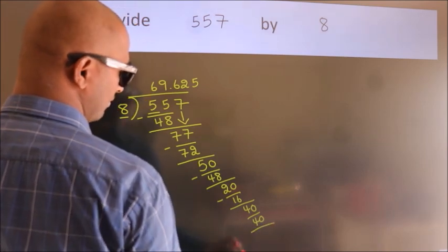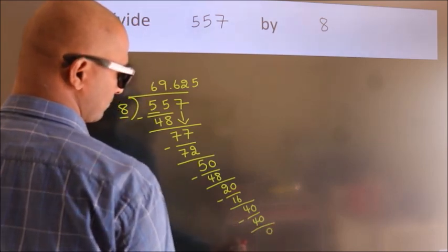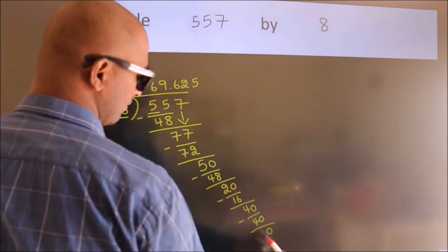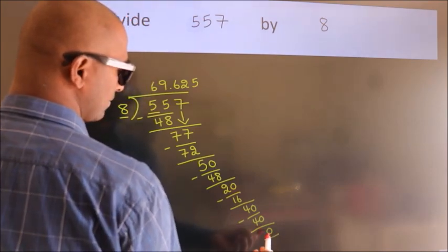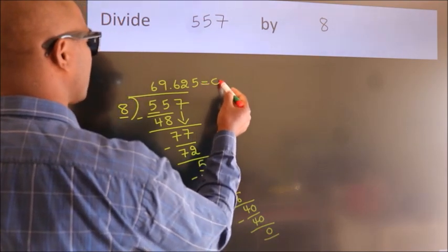Now we subtract. We get 0. Here, we got remainder 0. So this is our quotient.